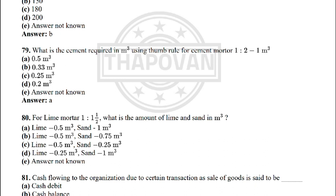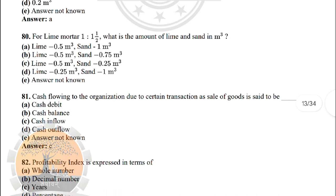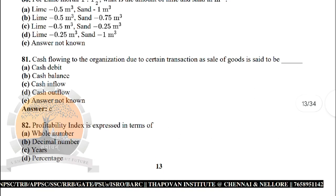Next: the cement required in m³ using thumb rule for mortar 1:2 for one m³ — the correct answer is option A: 0.5 m³. Next: for lime mortar 1:1.5, the amount of lime and sand in m³ — the correct answer is: lime 0.5 m³ and sand 1 m³.